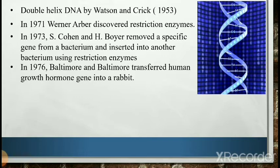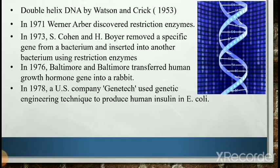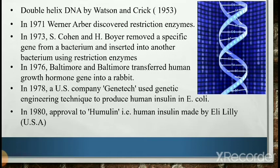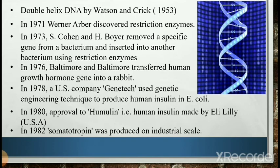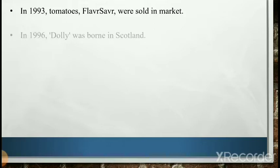In 1976, Baltimore successfully transferred a human growth hormone gene into a rabbit. In 1978, a U.S. company, Genentech, used genetic engineering techniques to produce human insulin in E. coli. In 1980, trials of the new hormone were conducted in the USA, France, Japan, and the United Kingdom. The U.S. Food and Drug Administration gave marketing approval to human insulin made by Eli Lilly, USA, by the end of 1982.